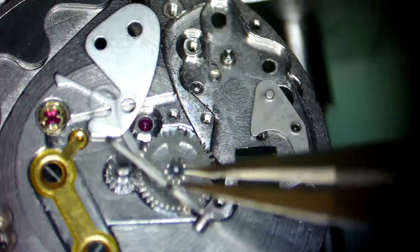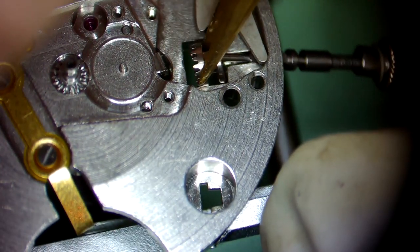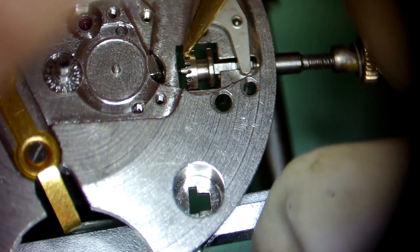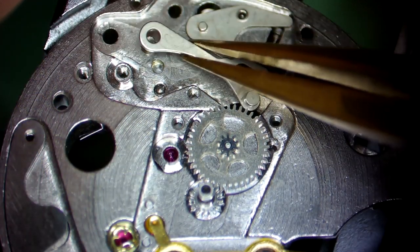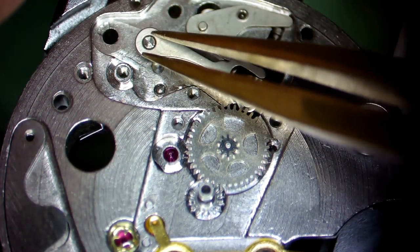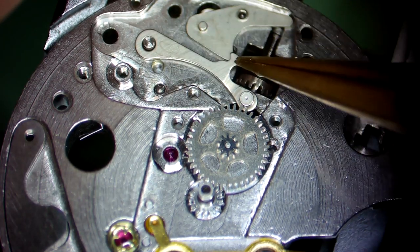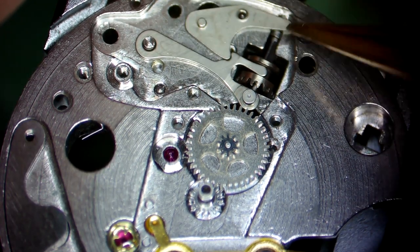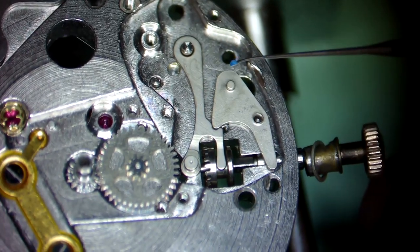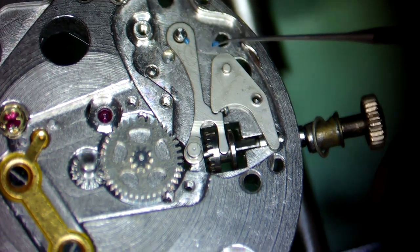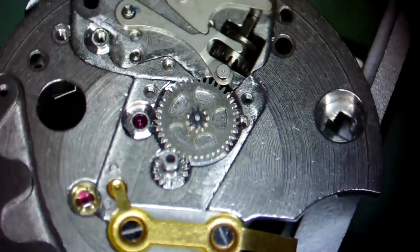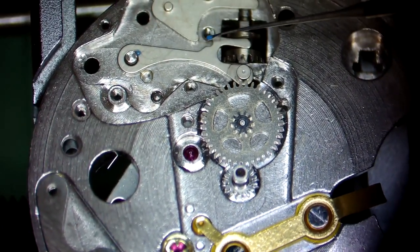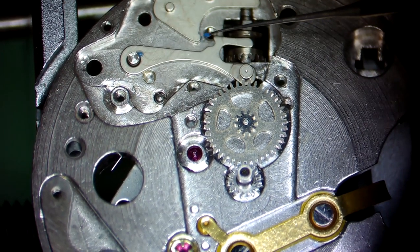The key with these watches, as with all watches, is just don't over-lubricate. The keyless works is your standard keyless works minus a clutch to engage a winding mechanism of any sort. Because again, this watch does not need that.